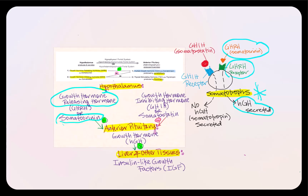Human growth hormone will lead to the secretion of an additional hormone called insulin-like growth factor, IGF. Human growth hormone receptors are found in a number of different tissues, including the liver. The liver has a receptor for growth hormone, which stimulates it to produce insulin-like growth factor, IGF.